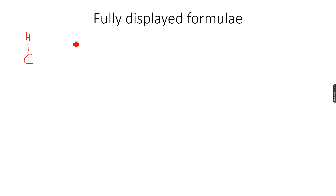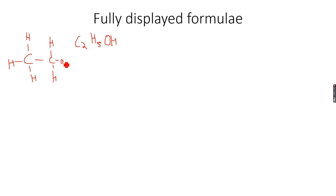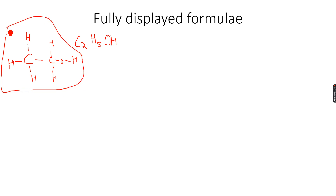Now let's look at the fully displayed formula. Taking ethanol, which is an alcohol with two carbon atoms - its general formula is C2H5OH. The fully displayed formula shows all bonds in the molecule: all carbon-hydrogen bonds, the carbon-carbon bond, the carbon-oxygen bond, and the oxygen-hydrogen bond. These are called fully displayed formulas because you can see each and every single bond.